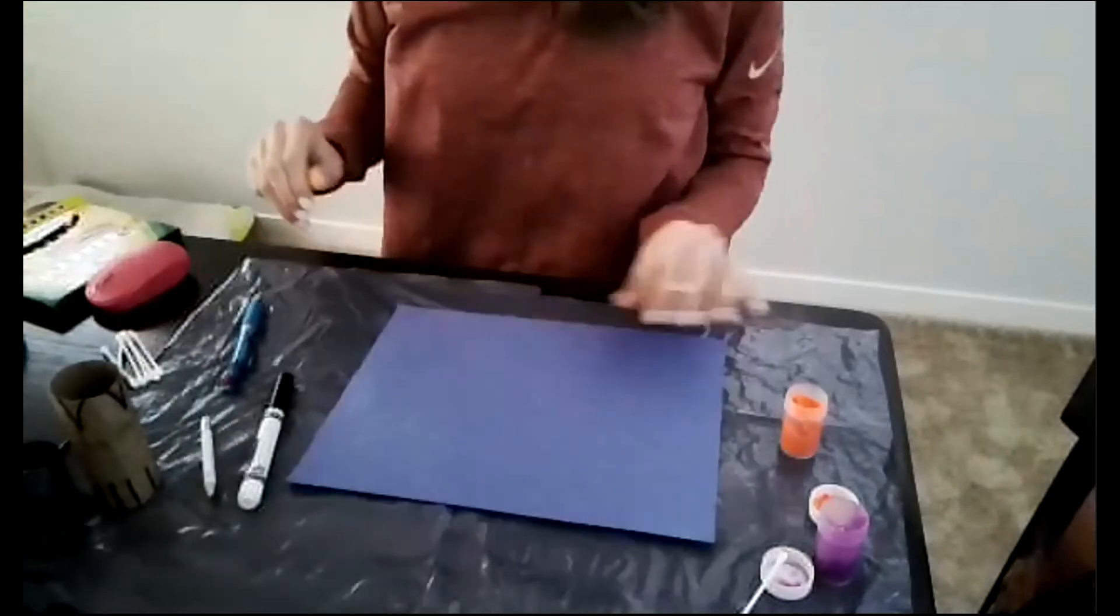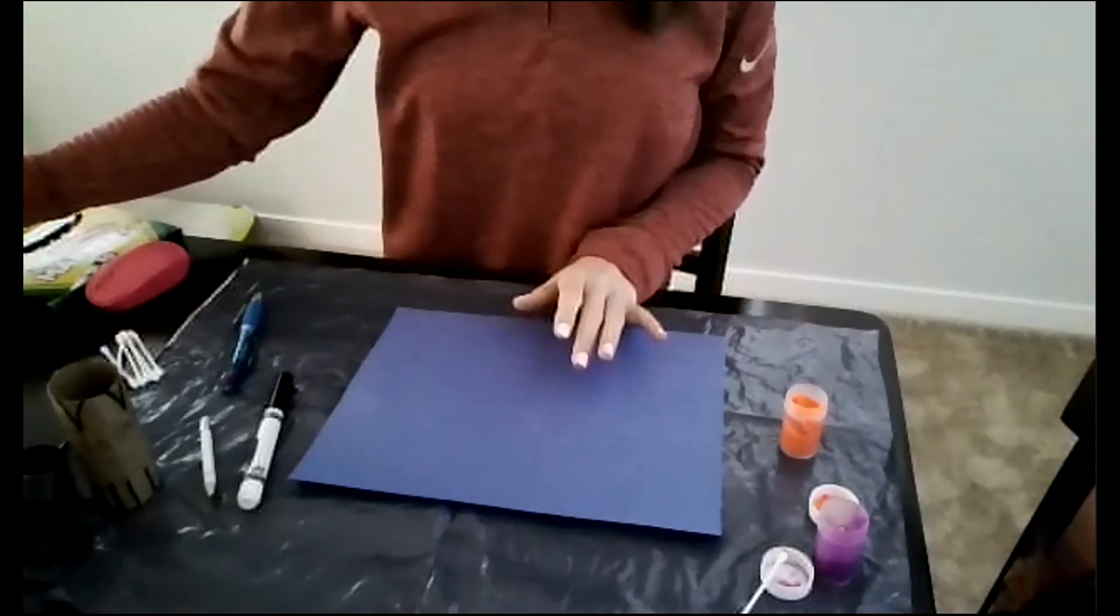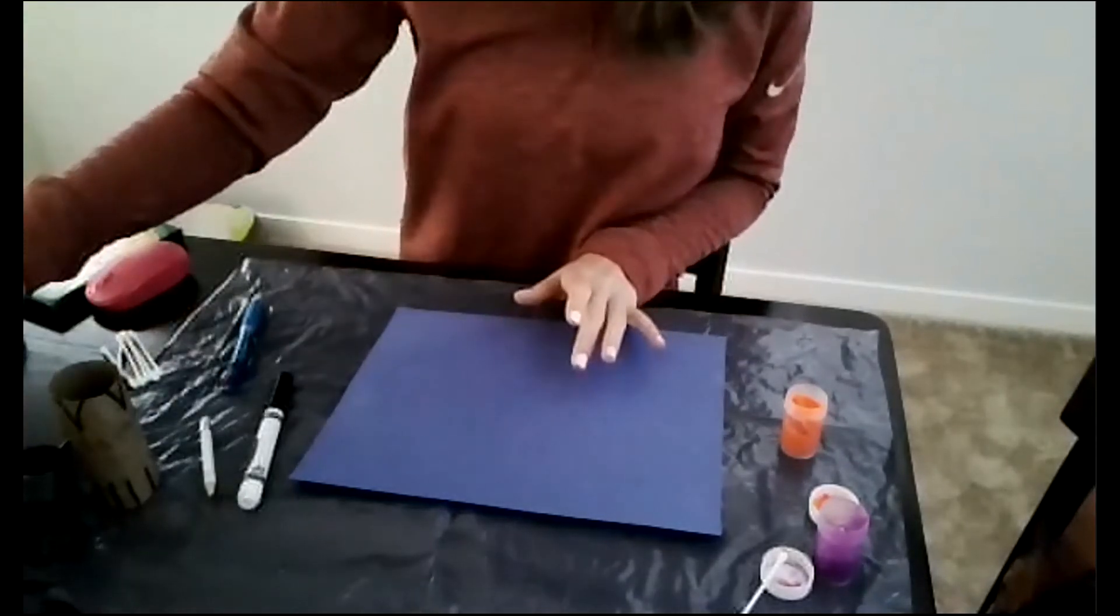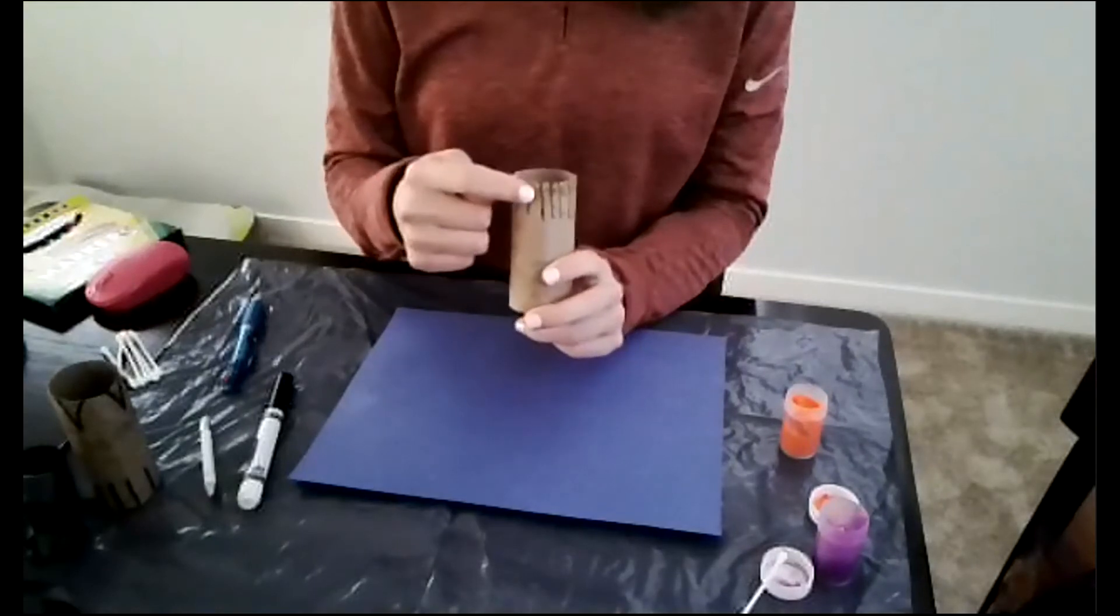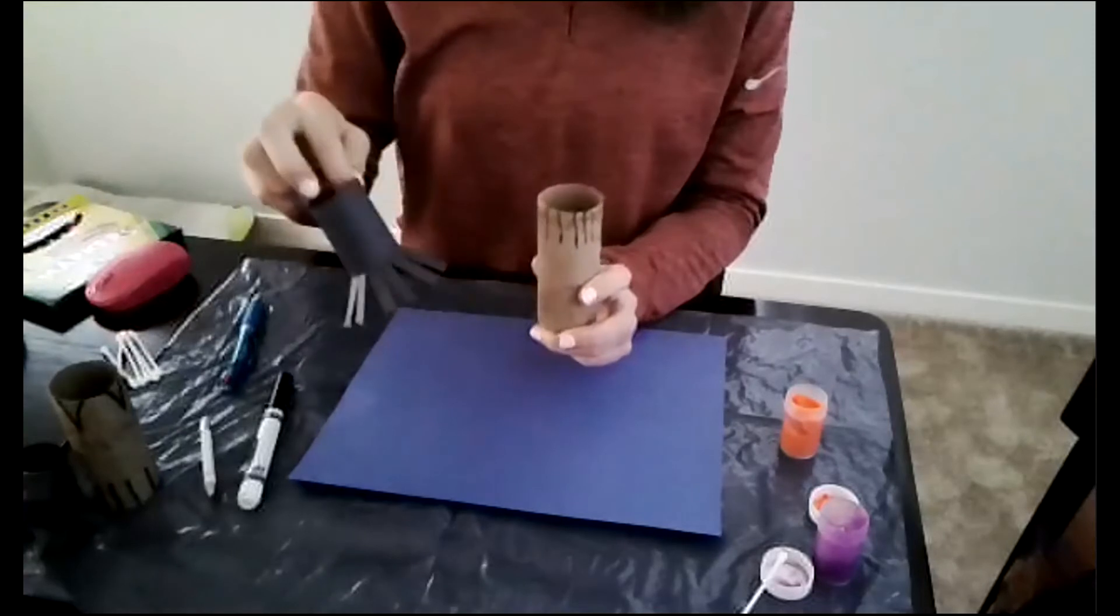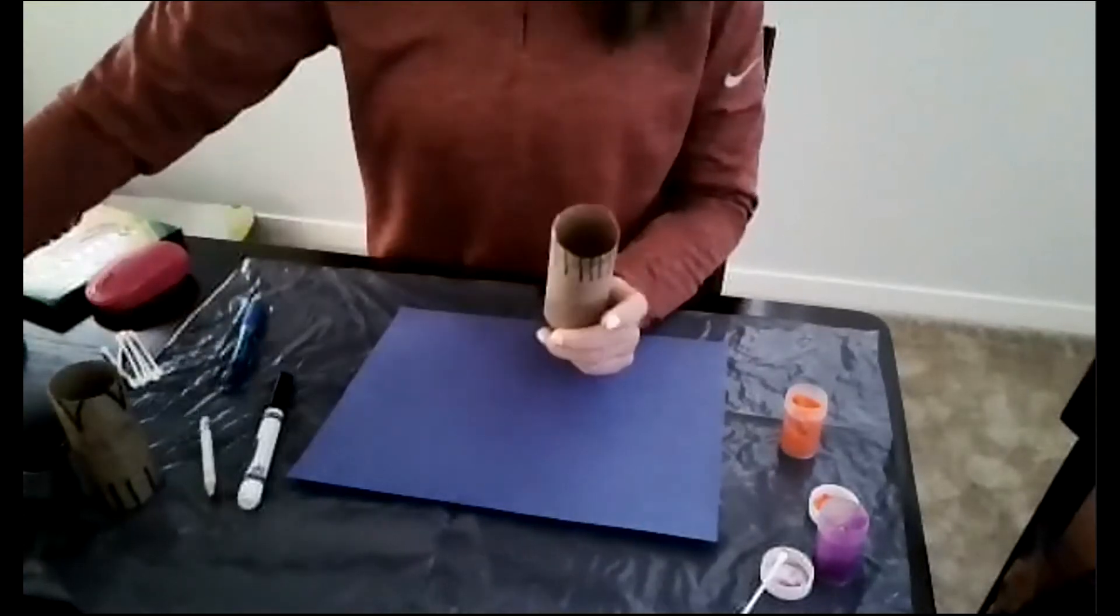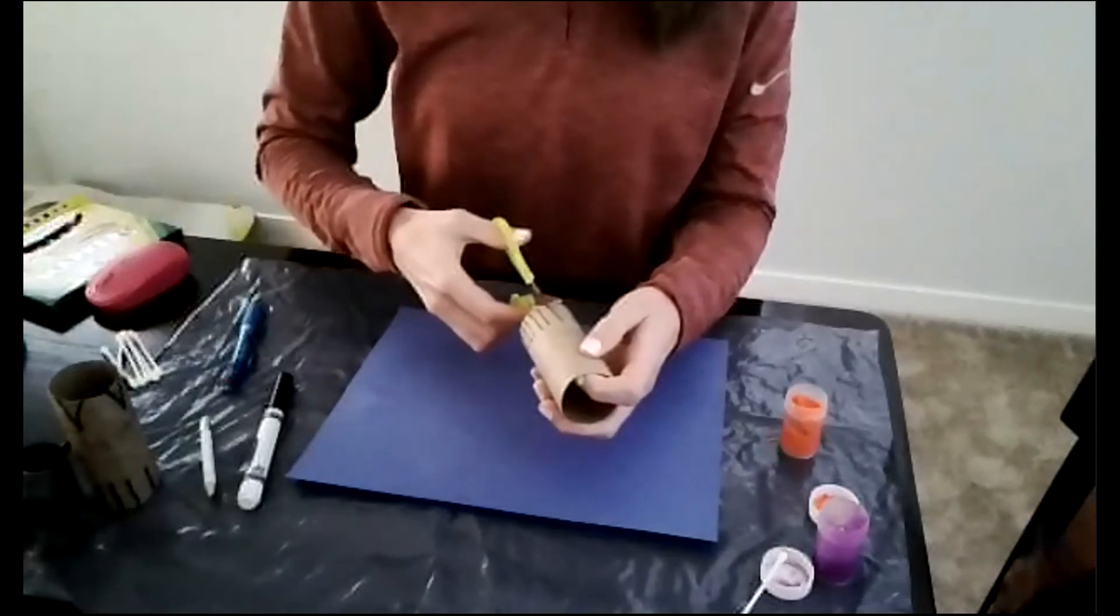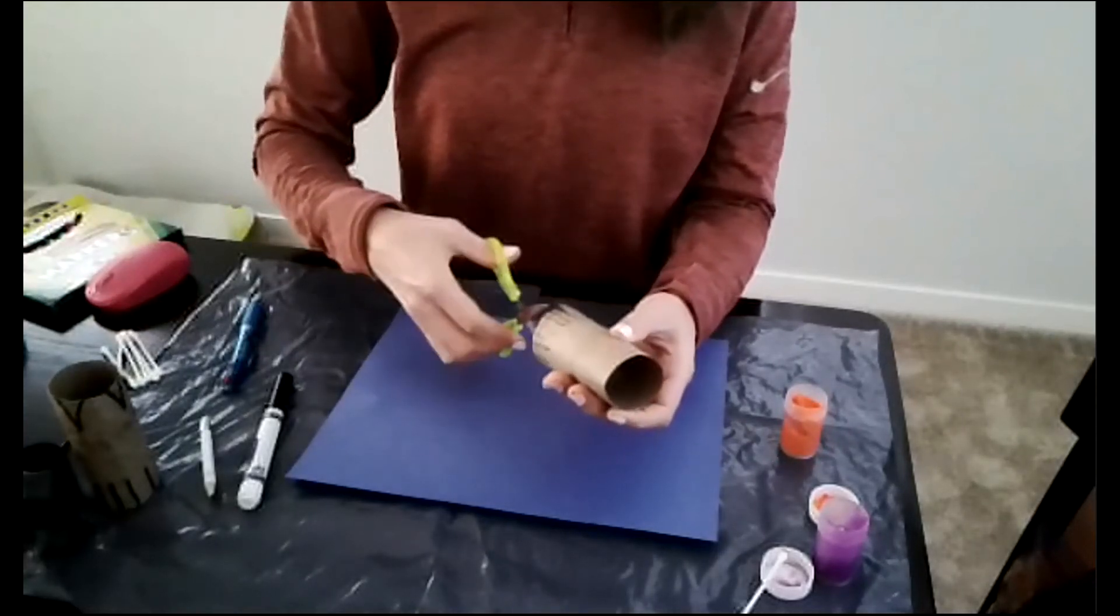And then for your flowers, you can do one of two things for the flowers. I would encourage the parents to make the lines on either the rolled up construction paper or on your cardboard rolls and then have your child cut the lines to make the stamp.